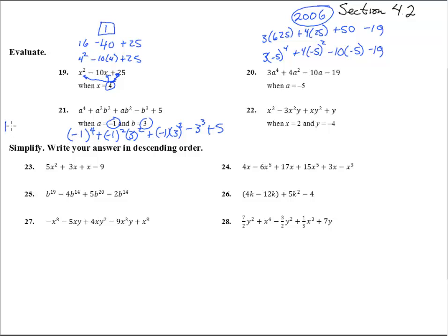So we get 1 plus negative 1 squared is 1 times 3 squared, that's 9, plus a negative 9 there. And then minus 3 cubed, that's 3 times 3 times 3 is 27 plus 5. So we have negative 21 is what that comes out to be.